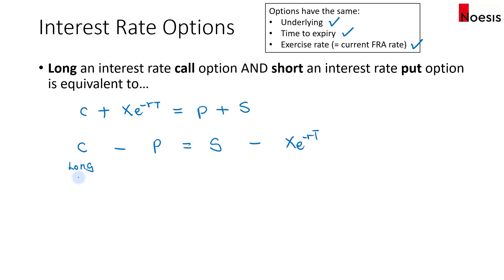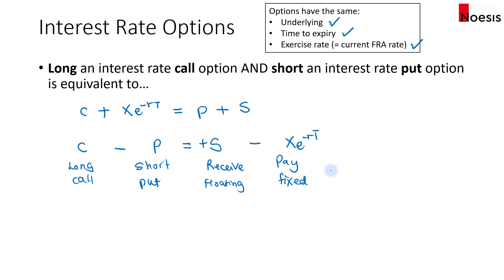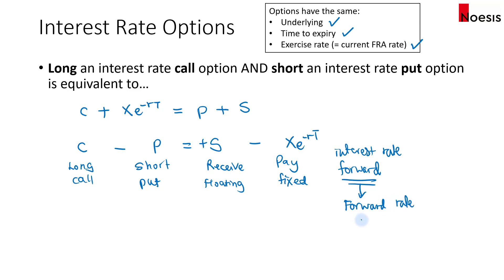So when you have a long interest rate call and a short interest rate put, that will be equivalent to receive floating and pay fixed. The underlying portion is a floating amount — because it's a plus, we receive it — and where we minus, that is where you pay a fixed amount. The risk-free bond is a fixed amount, and there is only one settlement in this case. So this net amount would be equivalent to an interest rate forward, also known as a forward rate agreement, or FRA. To recap: a long call and a short put option would be equivalent to a receive floating, pay fixed forward rate agreement.